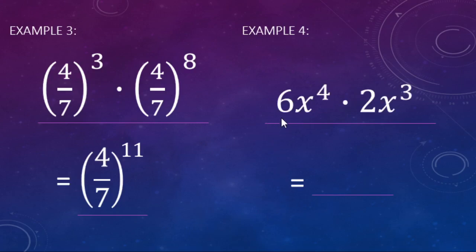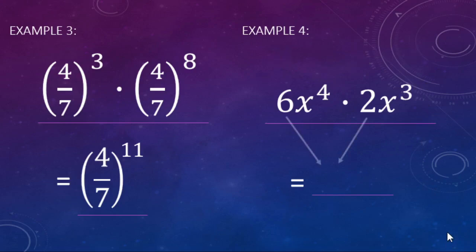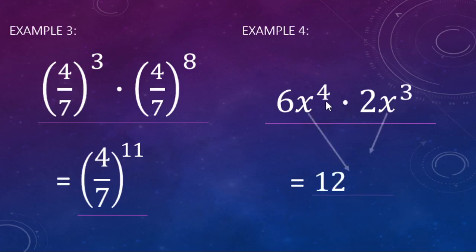Another example: six times x to the fourth power, times two times x to the third power. We use the commutative property to rearrange: six times two times x to the fourth times x to the third. We handle the number part first — six times two equals twelve. Then for the variable part, x to the fourth times x to the third: four x's multiplied times three more x's gives us seven x's total, so that's x to the seventh power. The result is 12x⁷.